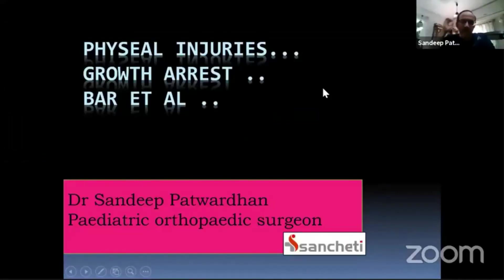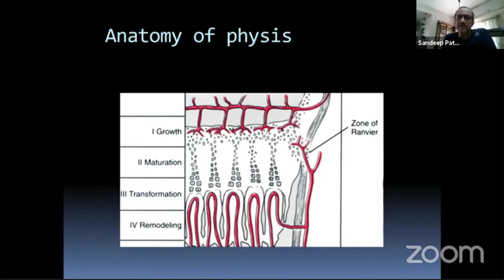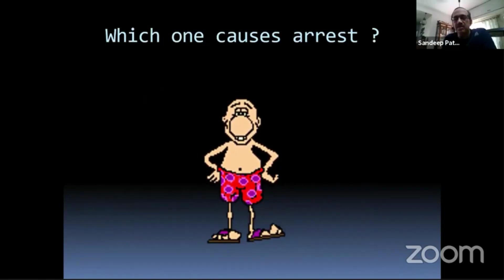Let me talk about growth arrest, physeal bars, and excision of bars — when and how. What we need to know is not only the zones of resting cartilage but also the blood supply. Unless you know there is a disruption of blood supply which infacts the physis, you will not realize why the bar comes. It is important as orthopedic surgeons to realize which injuries cause growth arrest.